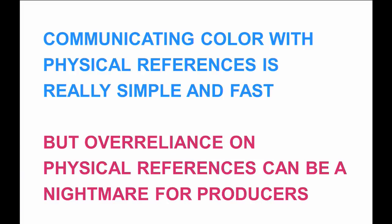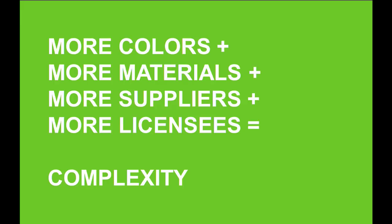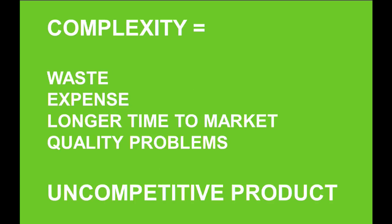In the print world you have spot color — mixing the ink beforehand to hit the color you want. We have spot color on coated and uncoated paper, CMYK, extended gamut CMYK, and metallic inks. The complexity is massive when you have more colors, more materials, more suppliers, more licensees — all contributing to total chaos in producing a color, resulting in waste, expense, longer lead times, and quality problems.